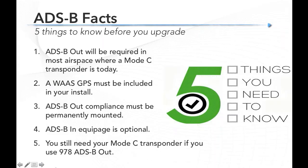With that big background in mind, we're going to put this into action and look at panel ADS-B solutions. Jeff takes over with five facts to think about when approaching this topic. First: if you need a Mode C transponder today — flying near Mode C veils, above 10,000 feet, or going into Class B or C airports — you're going to need ADS-B out come 2020. Second: a WAAS GPS is included in your install, and it needs to be a TSO'd WAAS GPS in a certified aircraft.